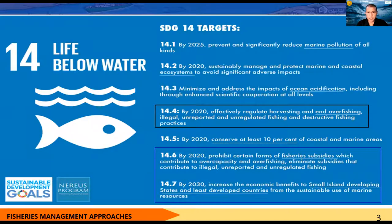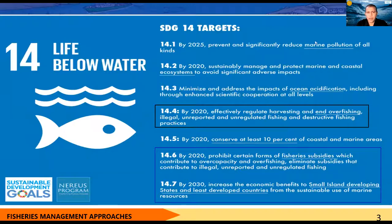Before going into fisheries management approaches, it has become a sort of mandate. As a signatory to the United Nations, we have agreed to go with the Sustainable Development Goal targets. Under SDG 14.4, the goal is to by 2020 effectively regulate harvesting and end overfishing, illegal unreported and unregulated fishing, and destructive fishing practices. Now 2020 has already passed, so at least we need five to ten years to end this situation, since we are a party.